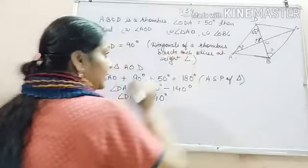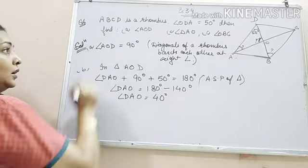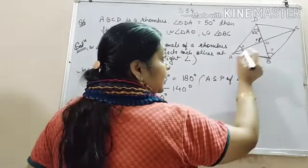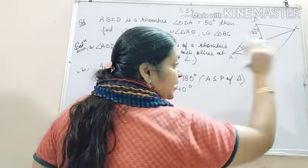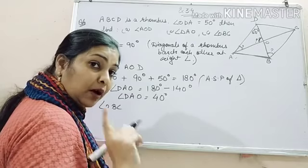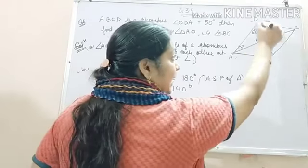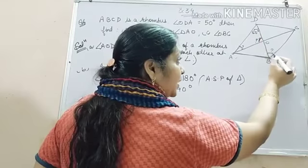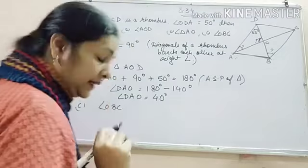Now the third one, angle OBC. AB is parallel to CD and this BD is a transversal because every rhombus is a parallelogram, and in a parallelogram, opposite sides are parallel. So AB is parallel to CD and BD is transversal. Therefore, this angle will be equal to this angle, alternate interior angles.